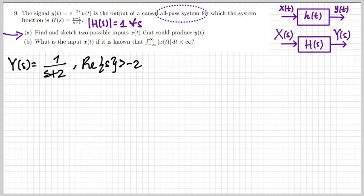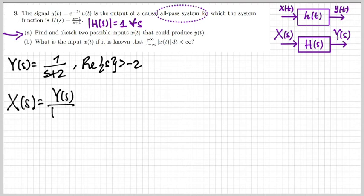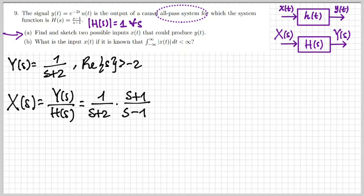In the Laplace domain, the system is represented as a black box H(s) taking input X(s) and producing output Y(s). In the time domain y(t) is the convolution of x and h, but in the Laplace domain Y(s) = X(s)·H(s). Therefore X(s) = Y(s)/H(s), which gives the expression X(s) = (s+1) / [(s+2)(s−1)].